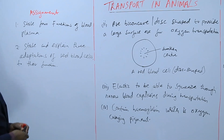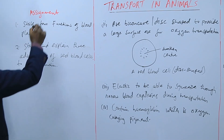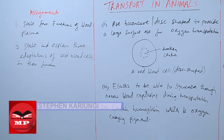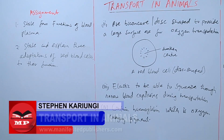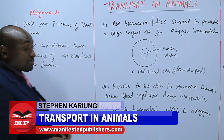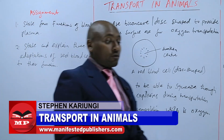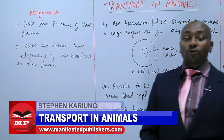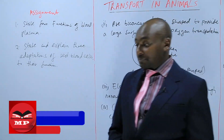So the assignment: question one — state four functions of blood plasma. Question two — state and explain three adaptations of red blood cells to their function. That marks the end of today's lesson; we'll continue from there next time. Goodbye.